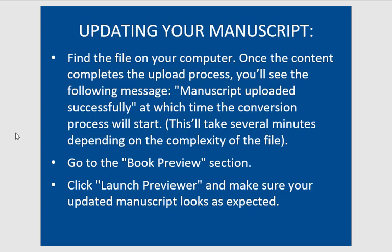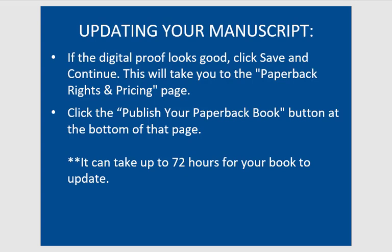The next step is to go to the Book Preview section just below and click 'Launch Previewer' to make sure your updated manuscript looks as expected — this is essentially the digital proof. If the digital proof looks good, click 'Save and Continue,' which takes you to the paperback rights and pricing page. Scroll down until you see 'Publish Your Paperback Book,' click that button, and you're done.